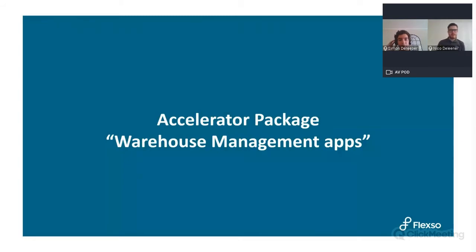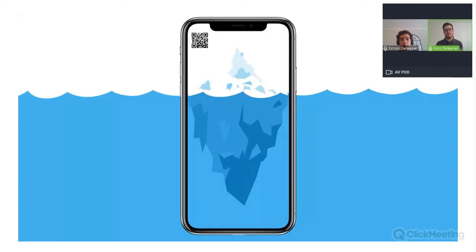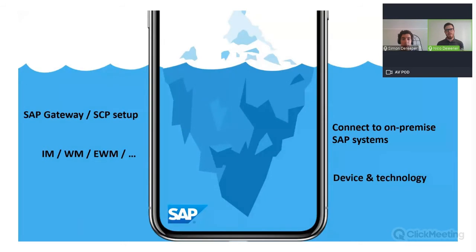The accelerator package — what is it? Think of the iceberg concept: the top, visible to everyone, is the scanning application itself. Underneath there's a lot of complexity: What gateway setup do you have — on-premise, hub, embedded? Do you have a cloud platform setup? How will you connect to the on-premise system? These are all things to consider.